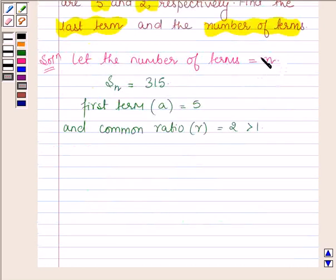And we have to find the value of n and the last term. Now as we know, sum of terms of GP series is a(r^n - 1)/(r - 1), so on substituting the values we have...